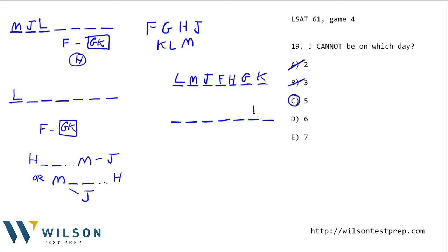If J is in the sixth spot, L is first again. M must be before J, so I can place M somewhere, then H further back, and fit F and GK in — that satisfies everything. Could J be in the seventh spot? Sure — we can just switch the last two items and it works fine, because J can be after or before H.